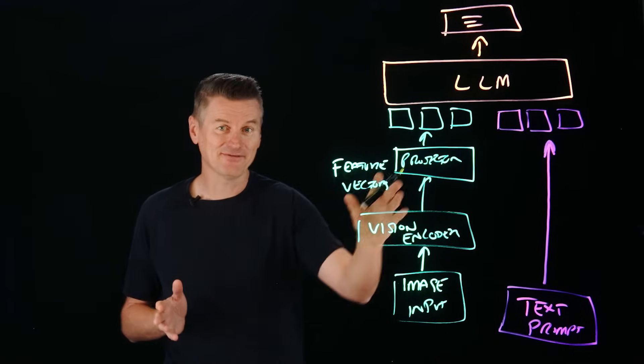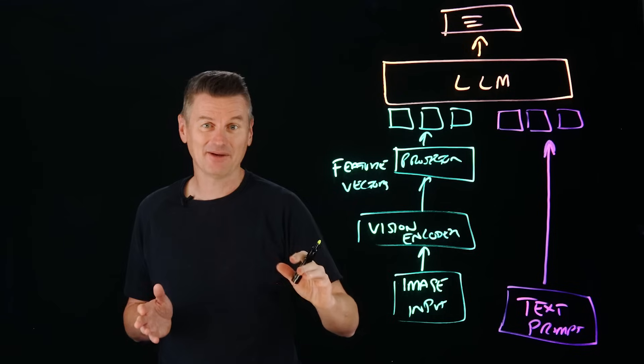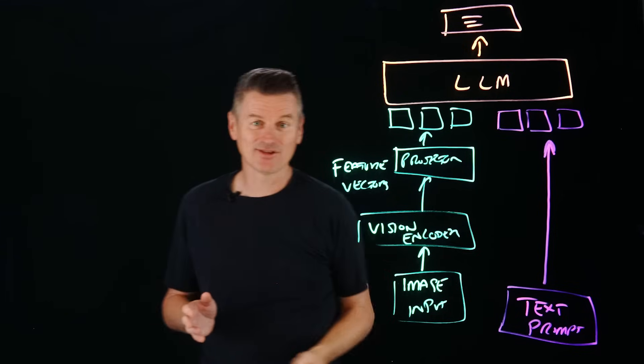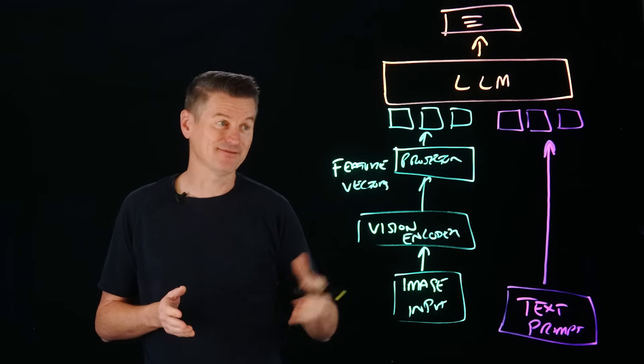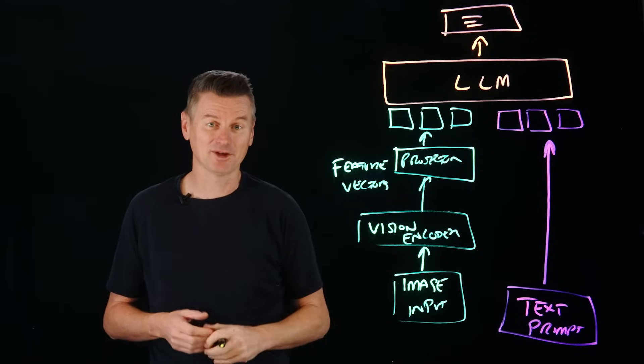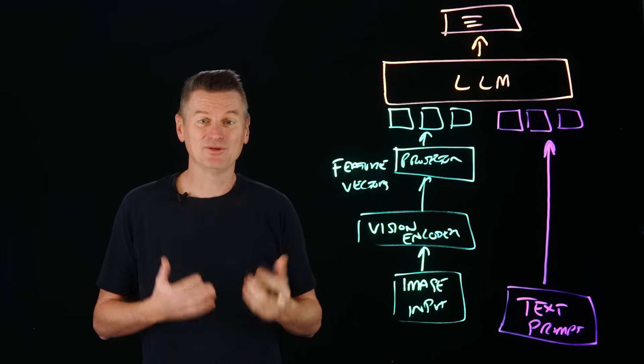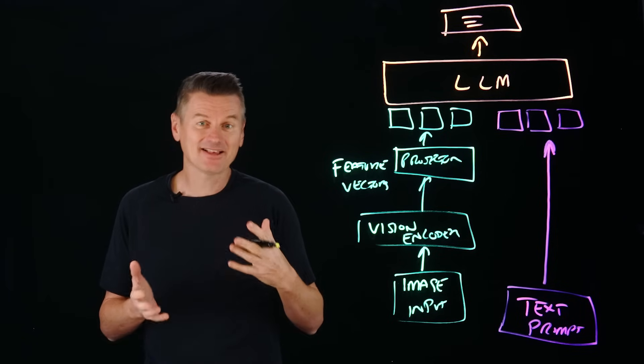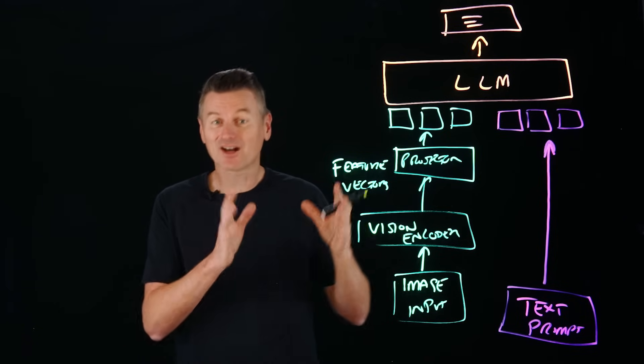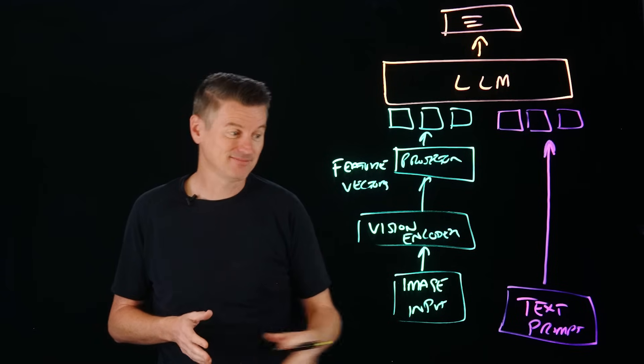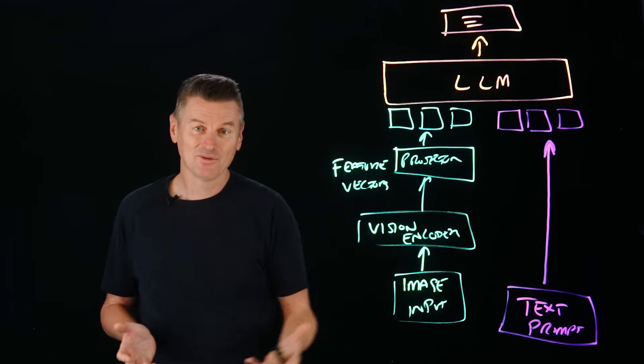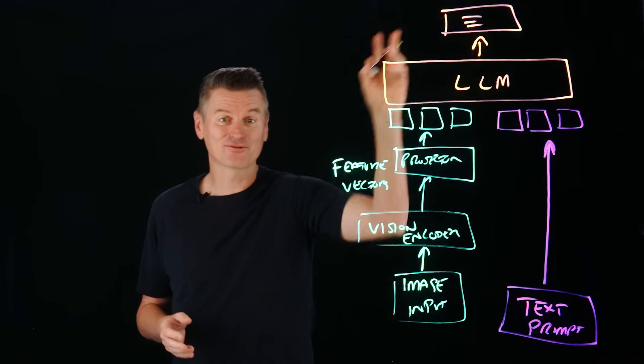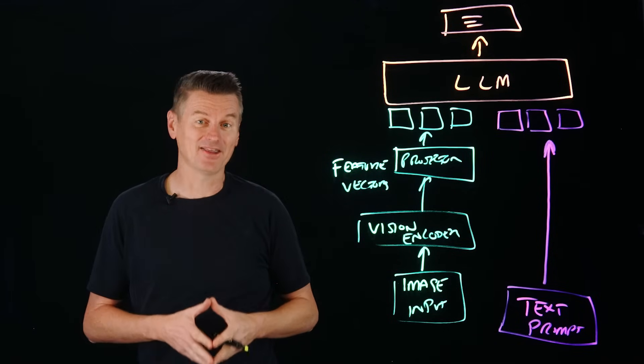So at this stage, we now have image tokens and we have text tokens, both existing in the same latent space. And these are then fed into the large language model, which processes them together using its attention mechanisms, analyzing how different tokens relate to one another, regardless of whether they originate from text or if they originate from an image.